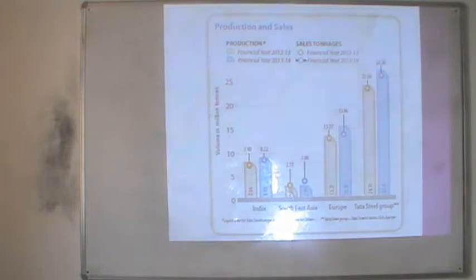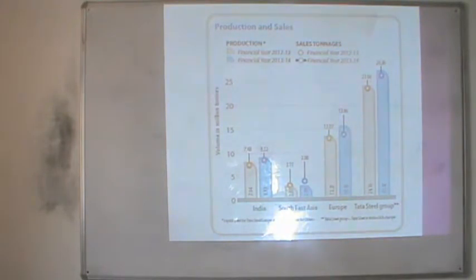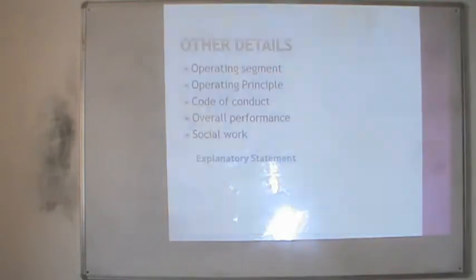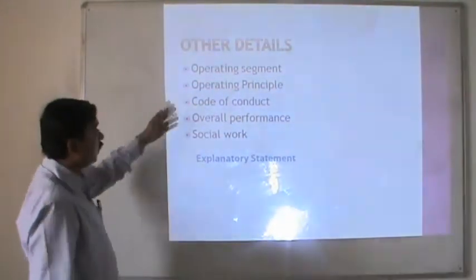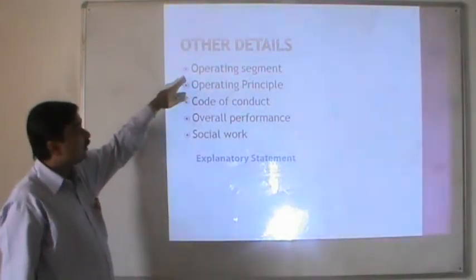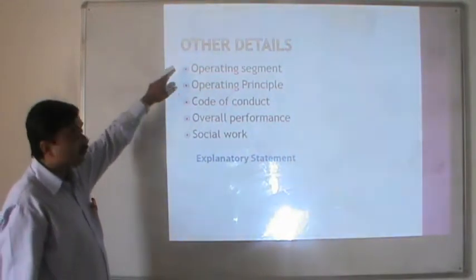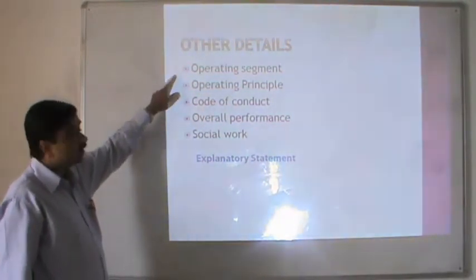In the current year, because of stock from the previous year, production may be less and sales may be higher. This is the steel which the company has made in terms of million tons. Not only this information, other details are also given by the company such as the operating segment. This company is working in the steel area, so the operating segment is steel — making steel rods, steel pipes.